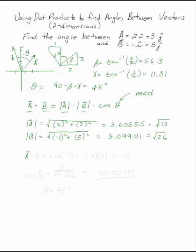The dot product you find by multiplying the I components together and adding them to the multiplication of the J components. This is 13.